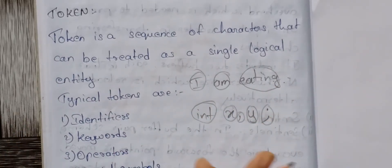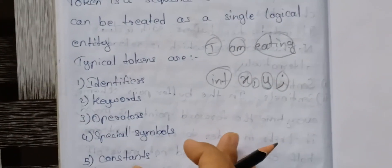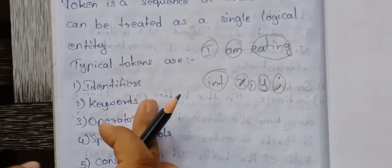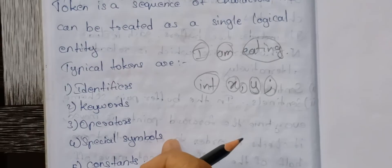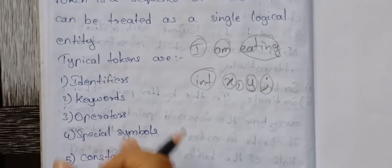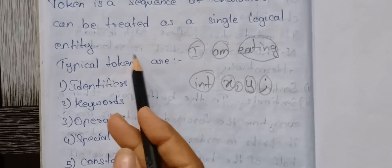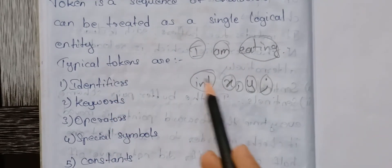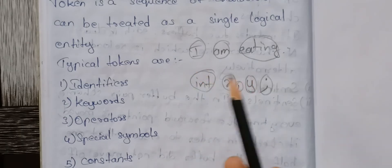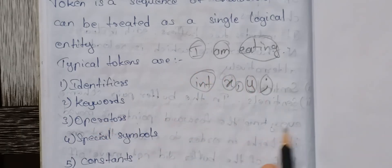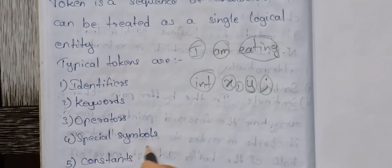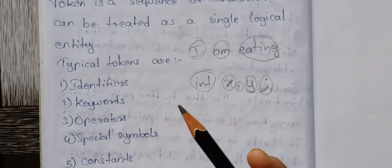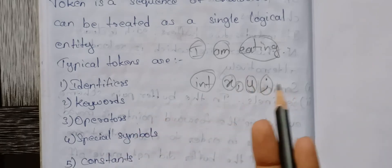So typically tokens are: identifiers, keywords, operators, and special symbols. For example, identifiers, keywords like int, operators like plus, minus, multiplication.